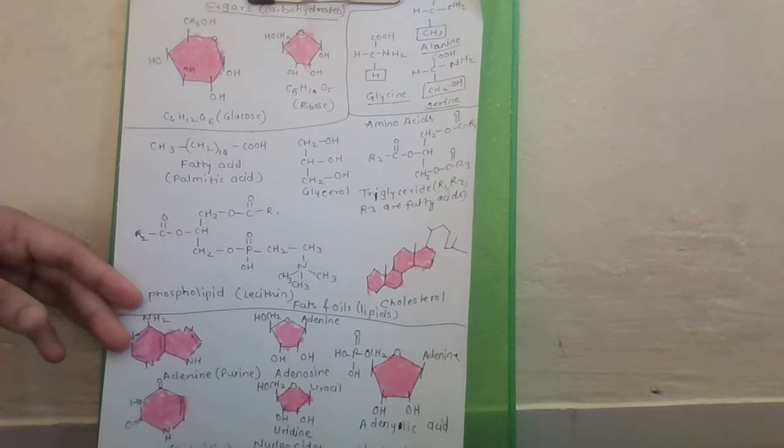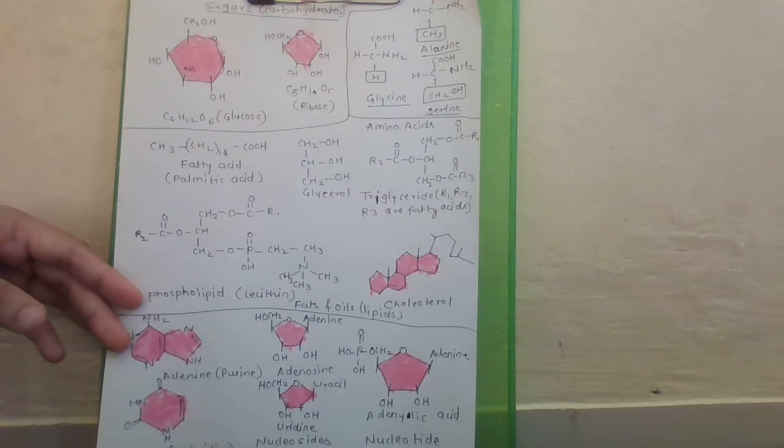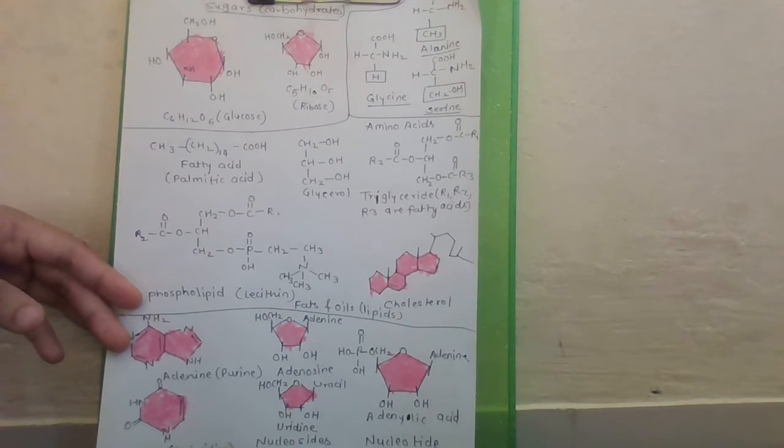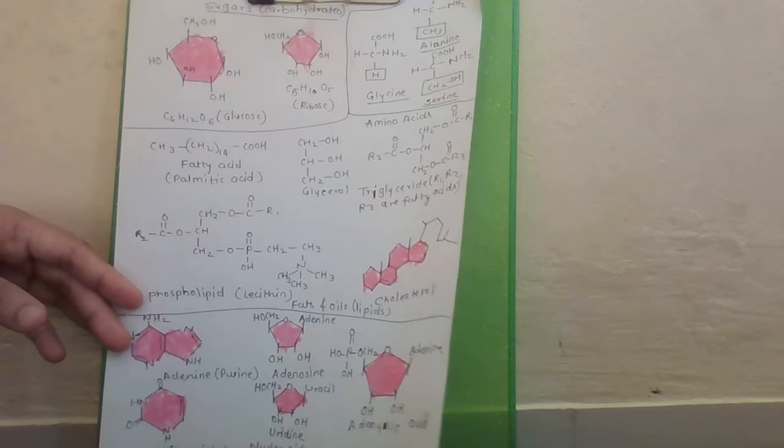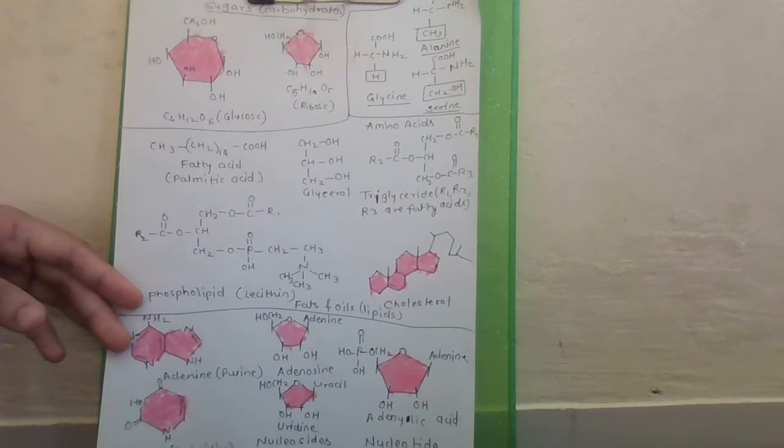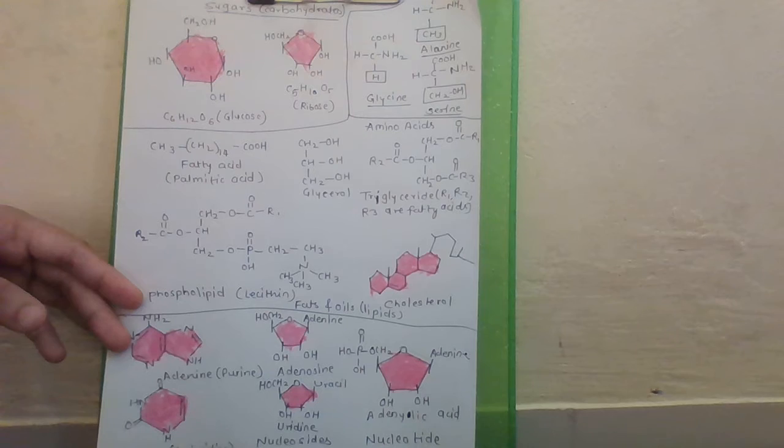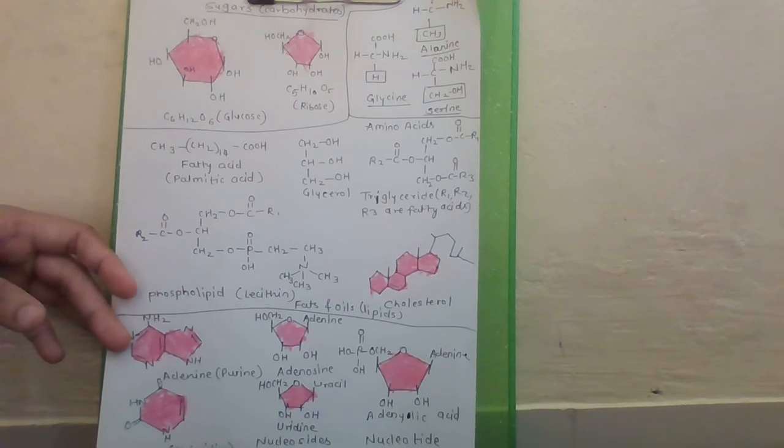Some lipids have phosphorous group. And based on that phosphory group, they are called phospholipids. They are found in cell membrane. Example of phospholipid is lecithin.